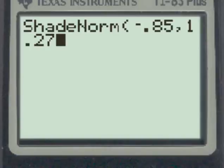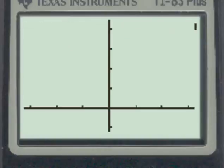You can elect to close the parentheses or not, it doesn't matter. And having input the values to the shade normal function, we'll simply hit the enter key.